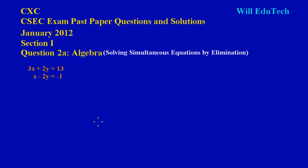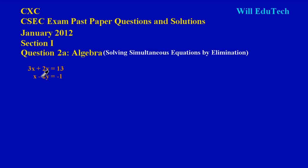Hey guys, nice to have you back. In the previous video we looked at question 2a and solved a pair of simultaneous equations by substitution. In this video, as promised, we are going to solve the same pair of simultaneous equations again, but using a different method — solving by elimination. Based on the equations here, this method is going to be quicker than the last one, though there is a special situation I'll explain as we go along.